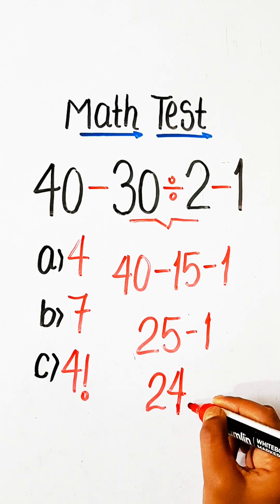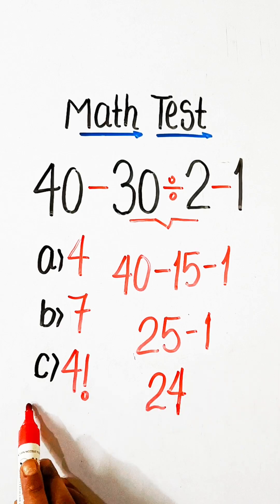So 24 is our correct answer. But in the options we have 4, 7, and 4 factorial.